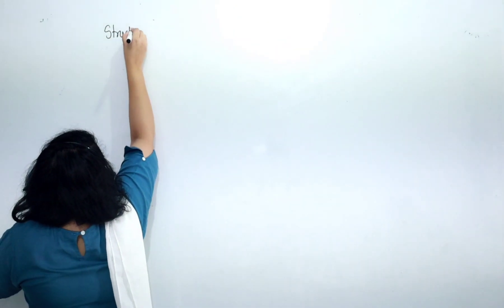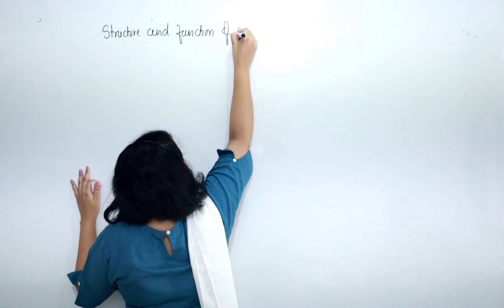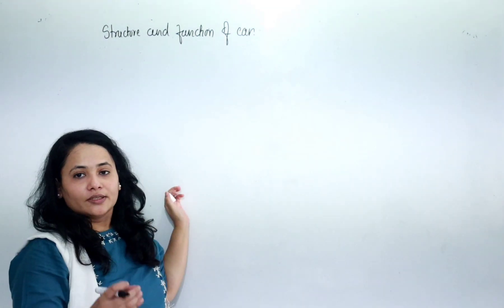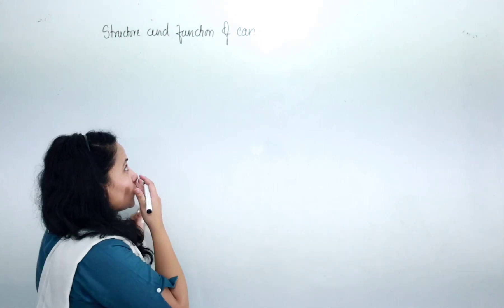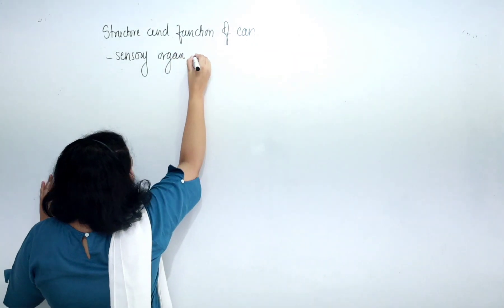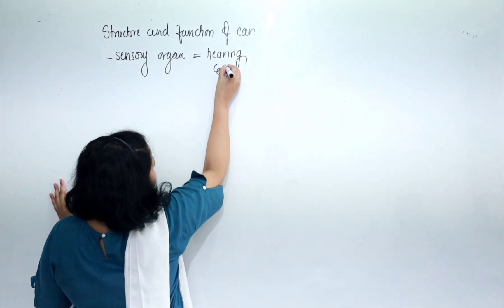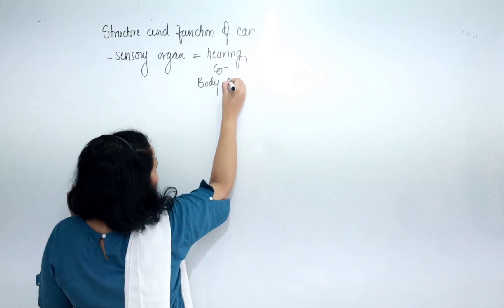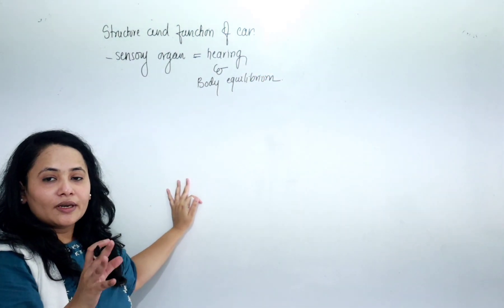We'll start with the topic of structure and function of the ear. What is the ear? The ear is a sensory organ which is responsible for hearing and body equilibrium. So it is a sensory organ whose two functions are: first, hearing; and second, maintaining body equilibrium.